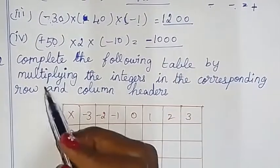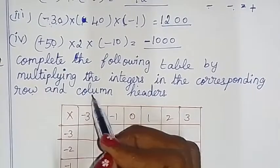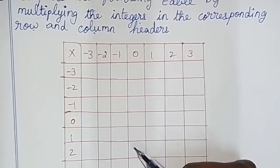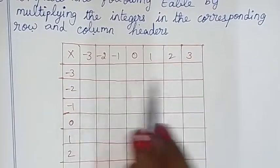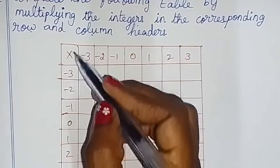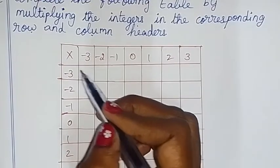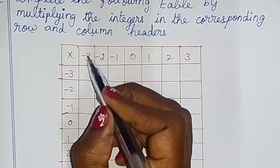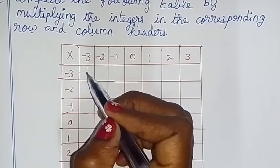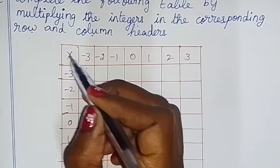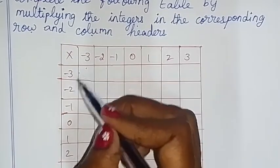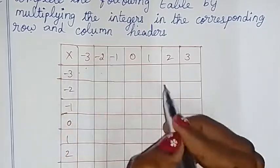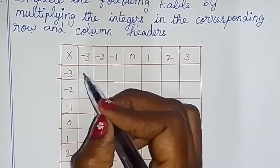Complete the following table by multiplying the integers. This is the corresponding row and column headers. So, the tabular column is multiplication of integers rules. Fill the rules. Okay. This is the question column and row. How do we solve this? Now, in the row, we multiply the first number. In the column, we multiply the first number.